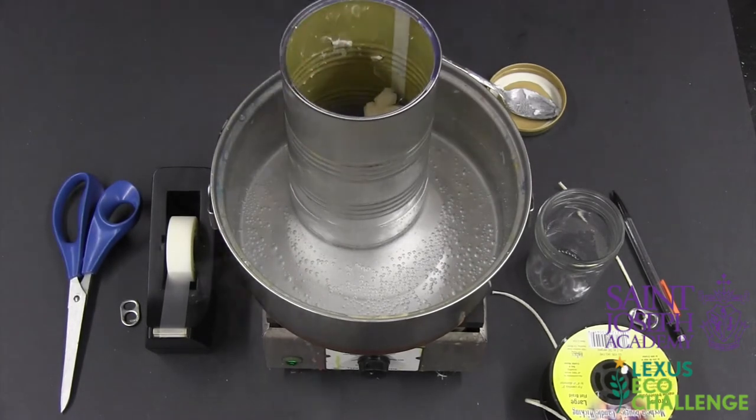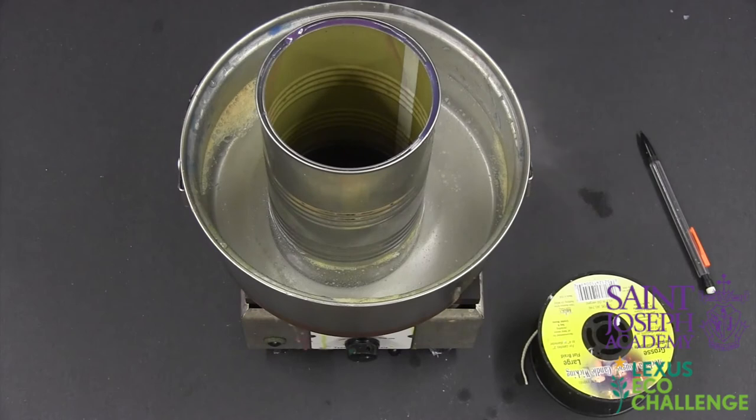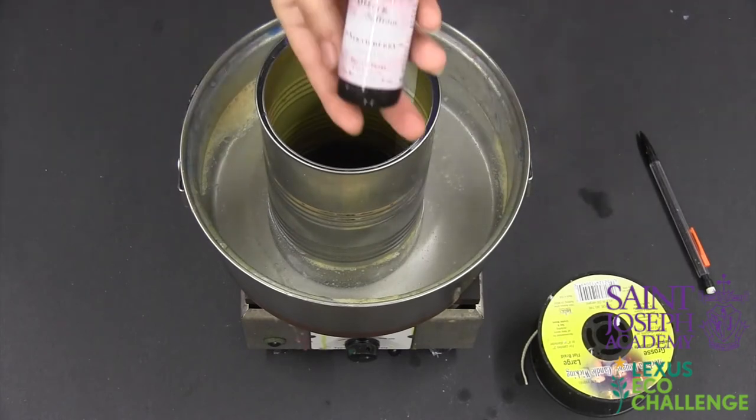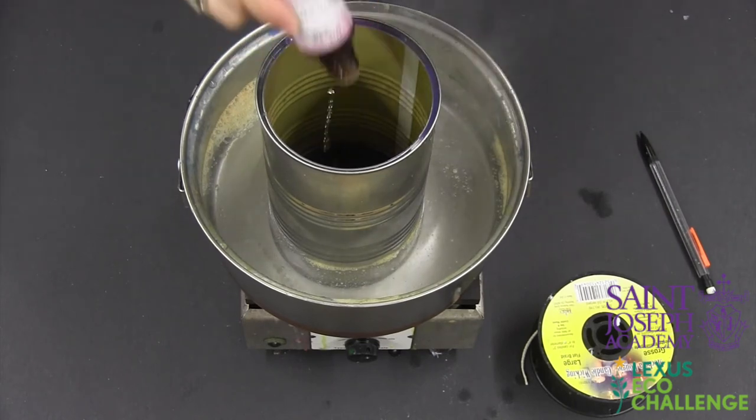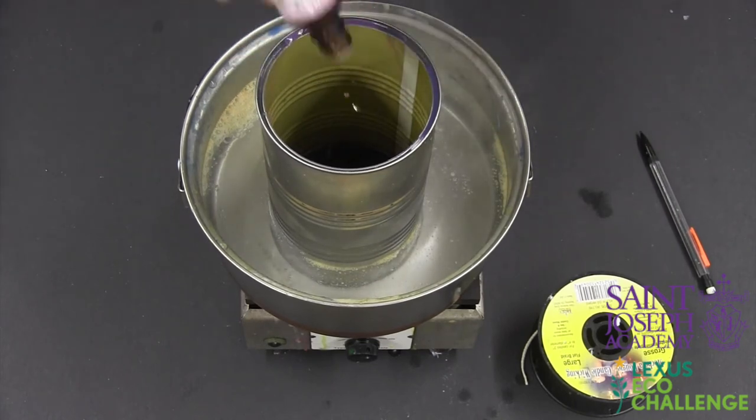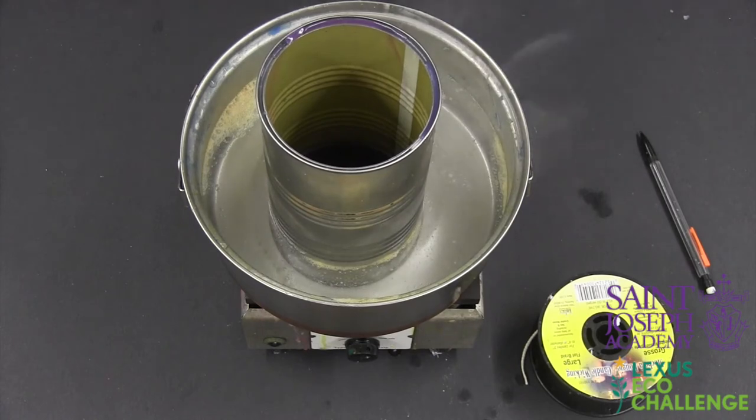Depending on how much Crisco you use, it will take about 5 to 20 minutes to completely melt. When the Crisco and crayon are completely melted, add whatever scent you would like. Keep in mind some scents might be more potent than others. You will need about 10 drops to 50 drops depending on how much Crisco you use and how potent the smell is.